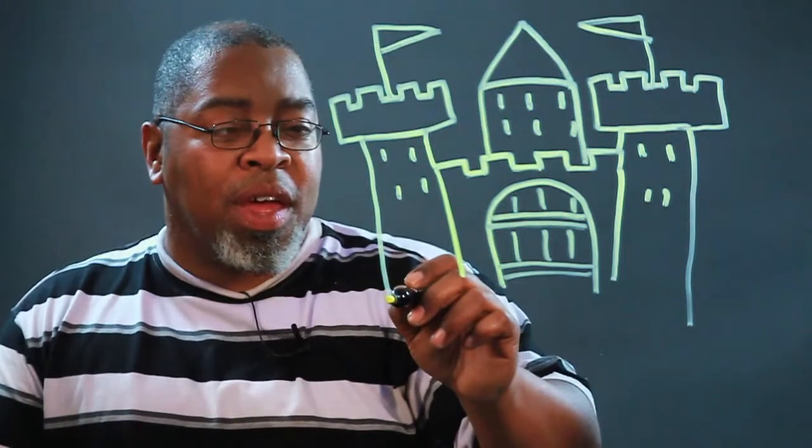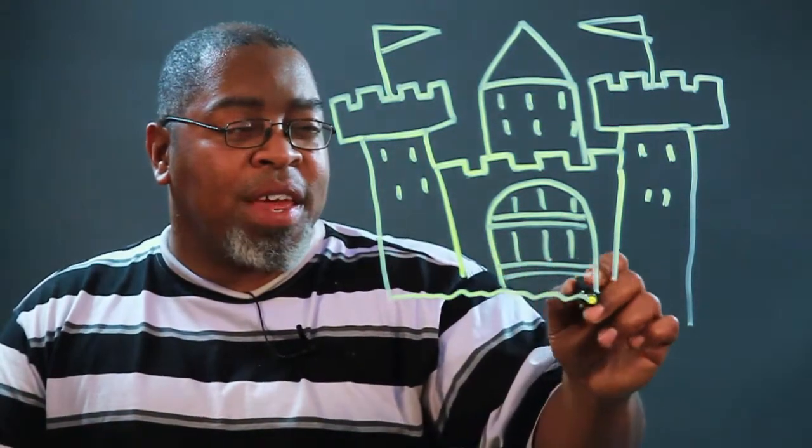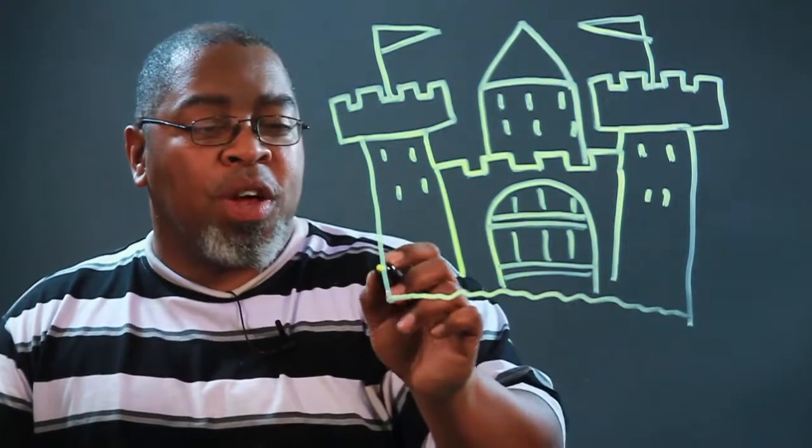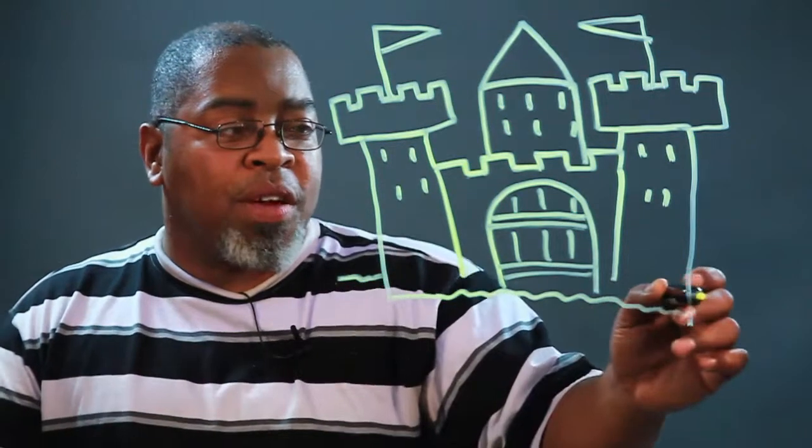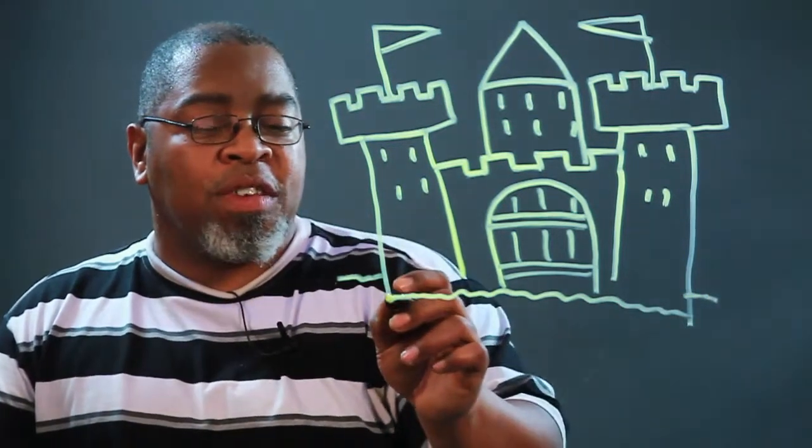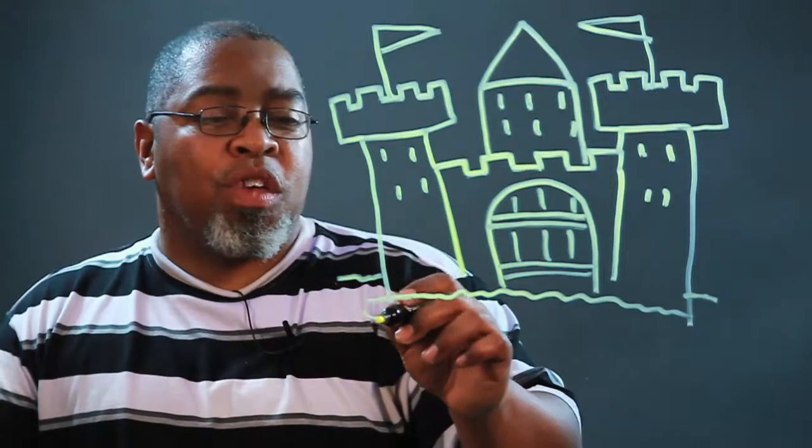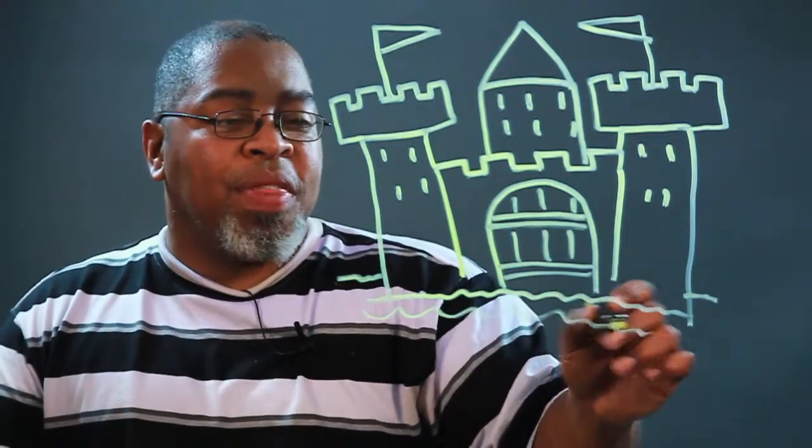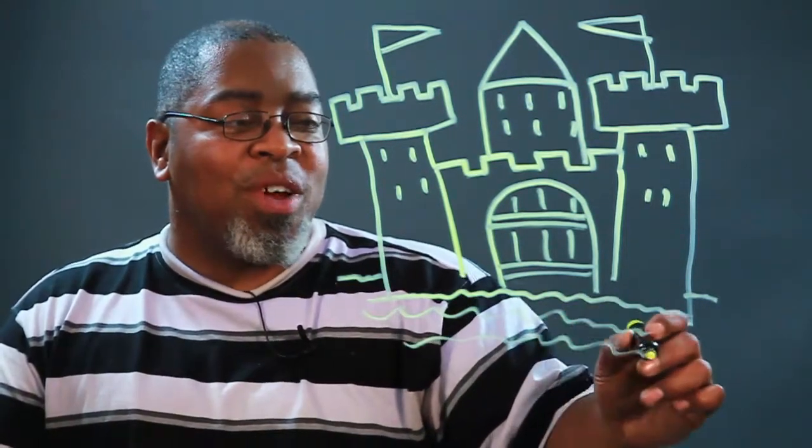Something's missing. What we're going to do is draw the ground right here. Draw a line over here representing the ground. Most castles are separated by a moat, so we're going to draw some water here that you have to cross to get to the castle.